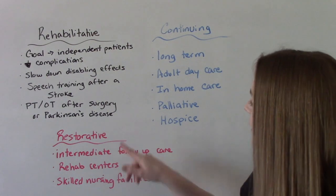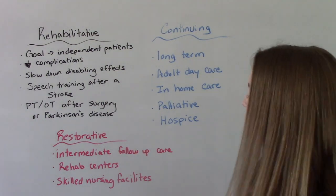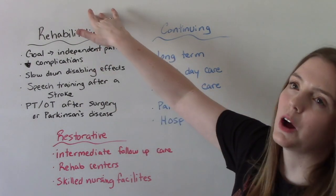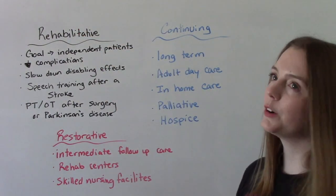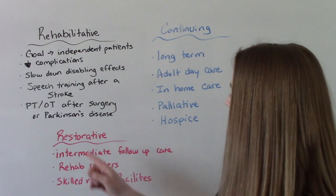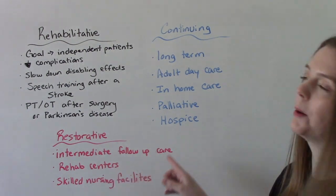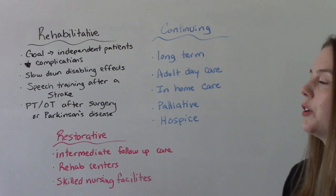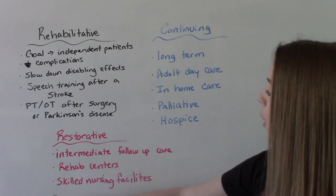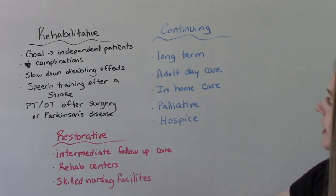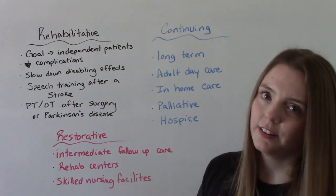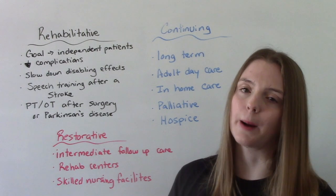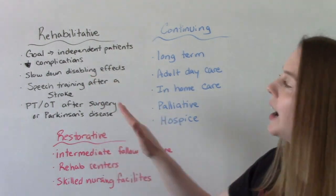Our third one here is restorative care. Restorative care can actually go hand in hand with rehabilitative care. The goal here is intermittent follow-up care. So maybe after a surgery, you're going to go to a rehab center or a skilled nursing facility, and you're going to get that care that's going to help promote independence and decrease your risk of complications. So the two of these kind of go hand in hand.